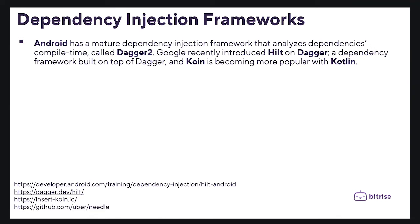Using dependency injection frameworks begins to make more sense. For example, Android has a mature dependency injection framework that analyzes dependencies at compile time called Dagger 2. Google recently introduced Hilt, a dependency framework built on top of Dagger.